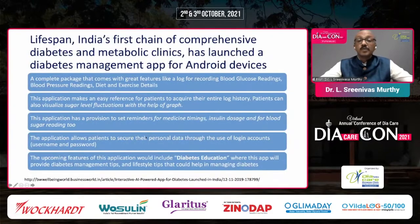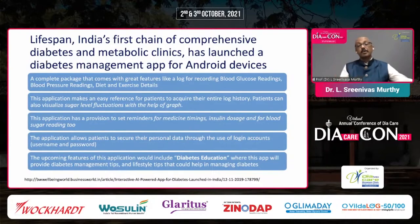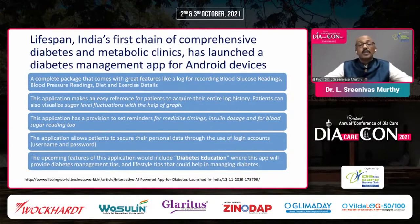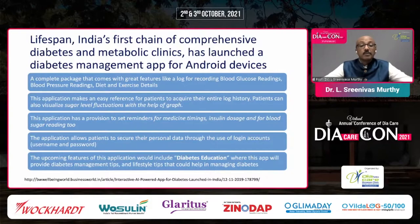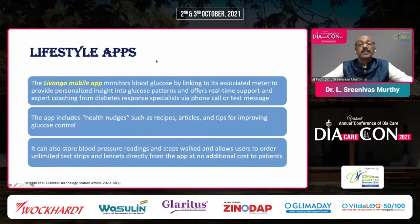Lifespan is a complete package with features for recording blood glucose, blood pressure, diet, and exercise details — all of which patients can input. It visualizes sugar level fluctuations through graphs, which patients can see themselves. It has reminders for medicine timings and can integrate with Alexa and other web-based systems to make alarms reminding about insulin dosage and food timings. Data is secured through login accounts on cloud-based storage. Diabetes education with lifestyle and management tips is also updated daily.